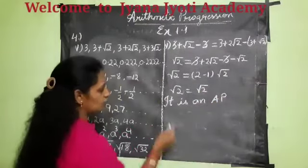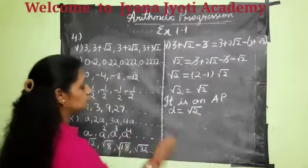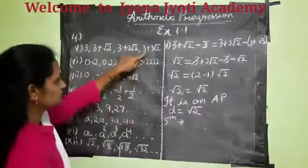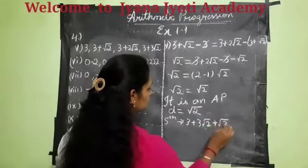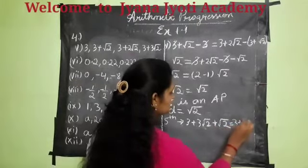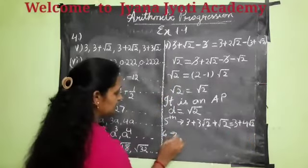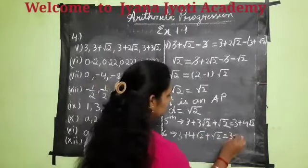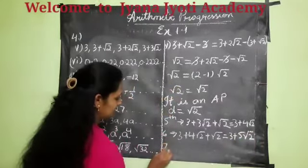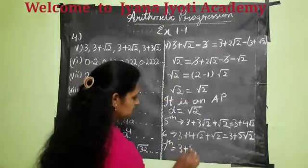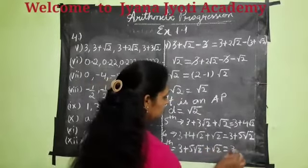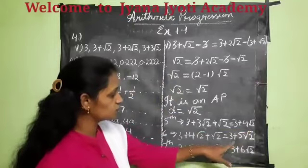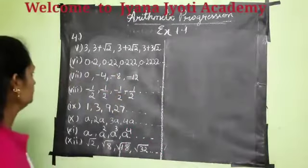So if it is an AP, what is the common difference D? Common difference D is root 2. So the fifth term: the fourth term is 3 plus 3 root 2, plus root 2 gives us 3 plus 4 root 2. Sixth term will be 3 plus 4 root 2 plus root 2, which gives us 3 plus 5 root 2. And the seventh term: 3 plus 5 root 2 plus root 2 gives us 3 plus 6 root 2. So the next three terms are 3 plus 4 root 2, 3 plus 5 root 2, 3 plus 6 root 2.